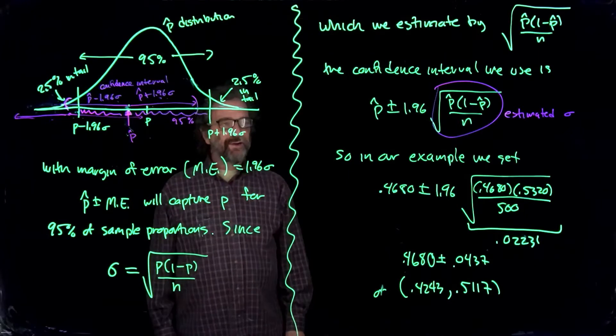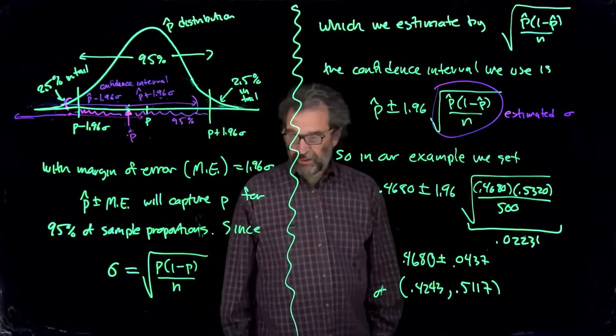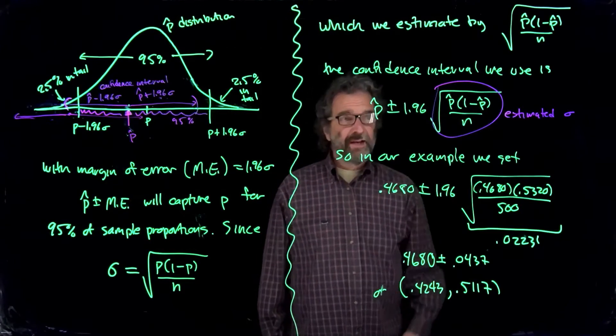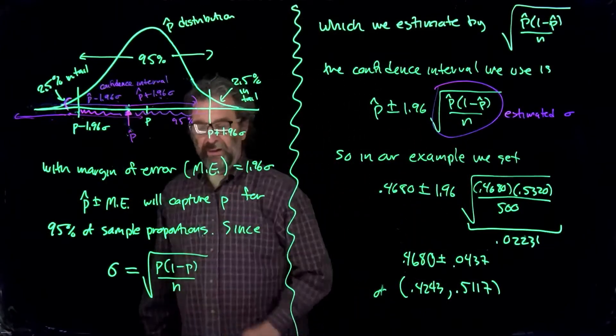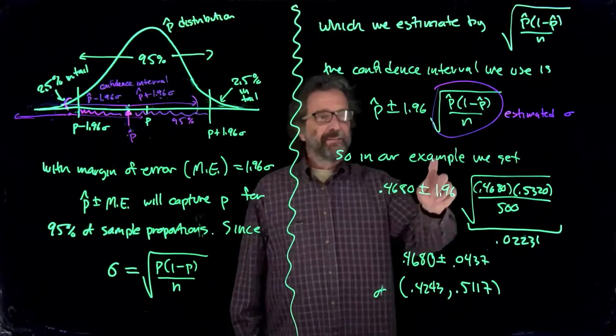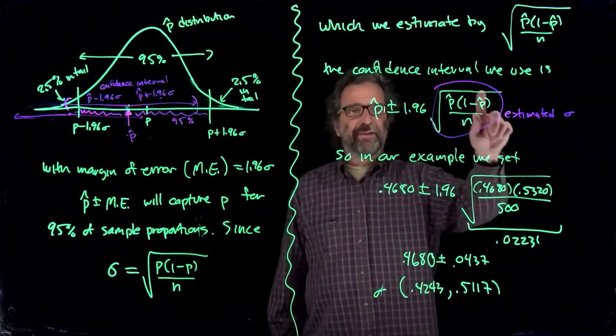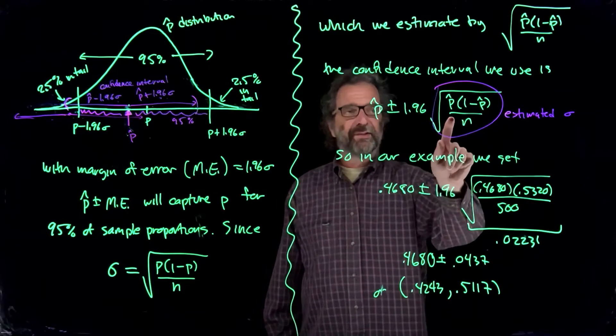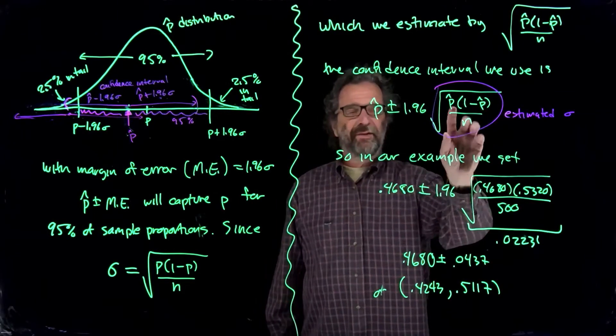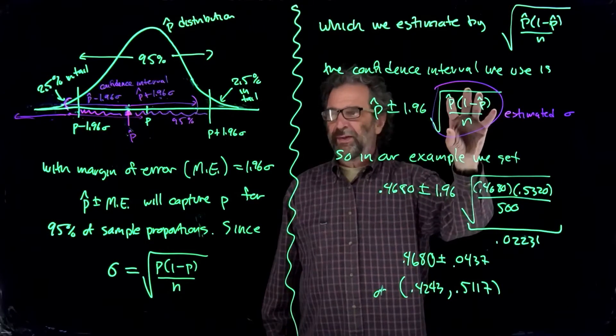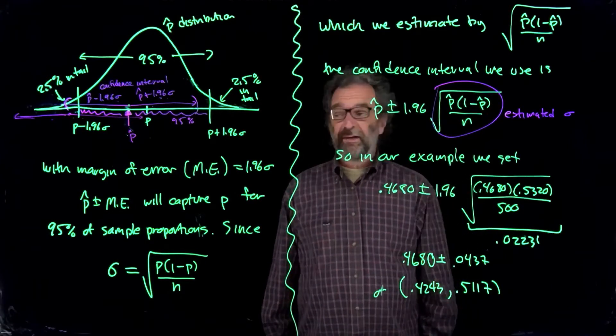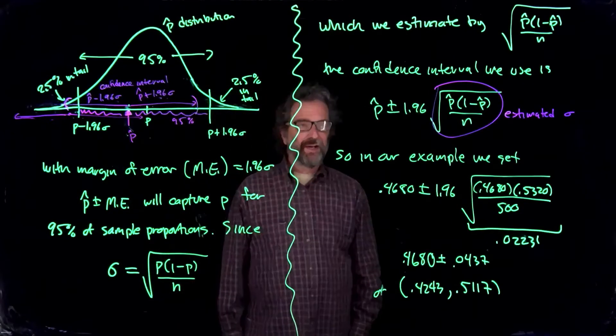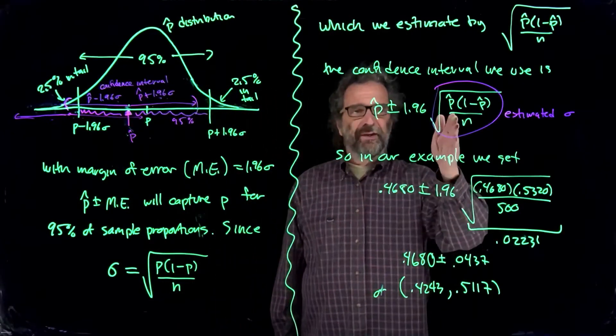So I think the idea there is n has to be pretty large for this to work, and then this thing here is pretty close to that thing there. And you can't make big mistakes here, it turns out. It's hard for this to be too far away from the right answer. It's a lot easier for p hat to be not close, but if you put the wrong p hat in here, you don't get that big a mistake in the sigma. Sigmas don't vary that much from p hat to p hat. So p hat can vary a lot, but sigma for it stays about the same size.